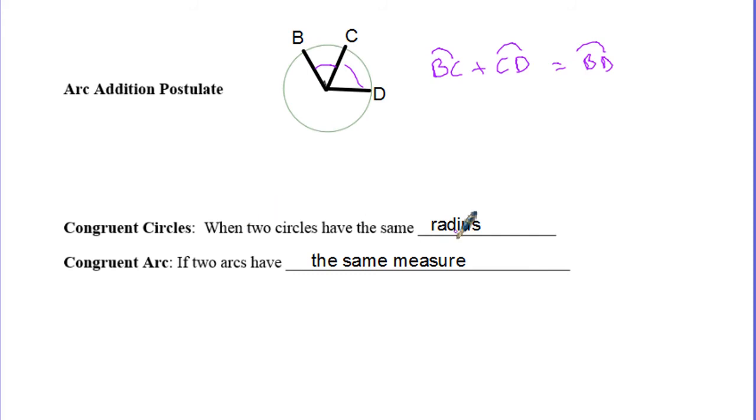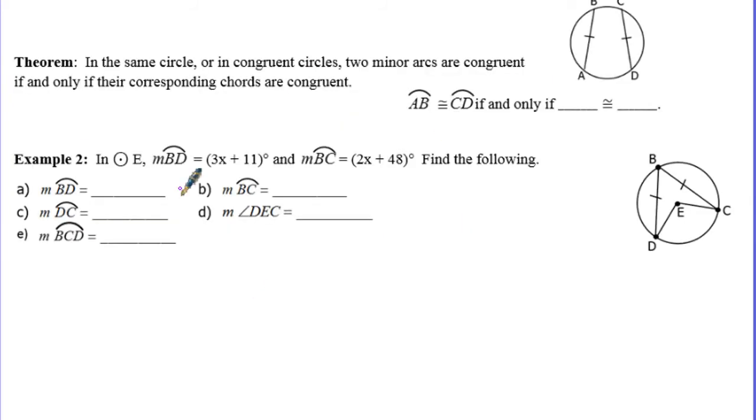Congruent circles are just when two circles have the same radius. If two circles have the same measurement, you can say those circles are congruent. Congruent arcs are if two arcs also have the same measurement. In the same circle or in congruent circles, two minor arcs are congruent if and only if their corresponding chords are congruent. I can say that arc AB is congruent to arc CD if and only if the segment or chord AB is congruent to chord CD. If these two chords are marked congruent, then this arc and this arc are also congruent.